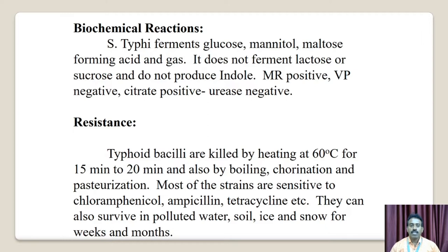Resistance. The typhoid bacilli are killed by heating at 60 degrees Celsius for 15 to 20 minutes and also by boiling. Chlorination and pasteurization techniques are also effective. Most strains are sensitive to chloramphenicol, ampicillin, tetracycline, and others. They can survive in polluted water, soil, ice, and snow for weeks to months.